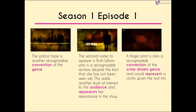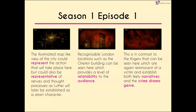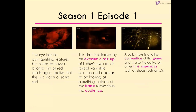We then have a sort of illuminated map view of the city. This could represent that the action is going to take place here, but from this angle it could also represent a thought process — because Luther is very much an intellectual character. Recognizable London locations such as the Gherkin building can be seen within the title sequence, providing a level of relatability for the audience, in contrast to fingers that are reminiscent of a victim.